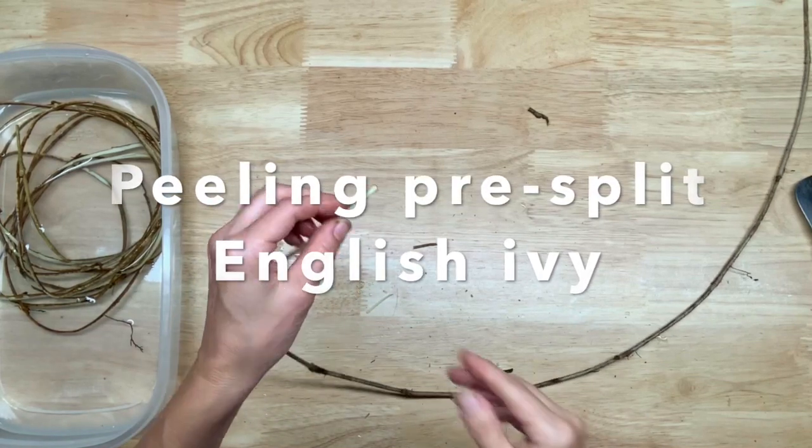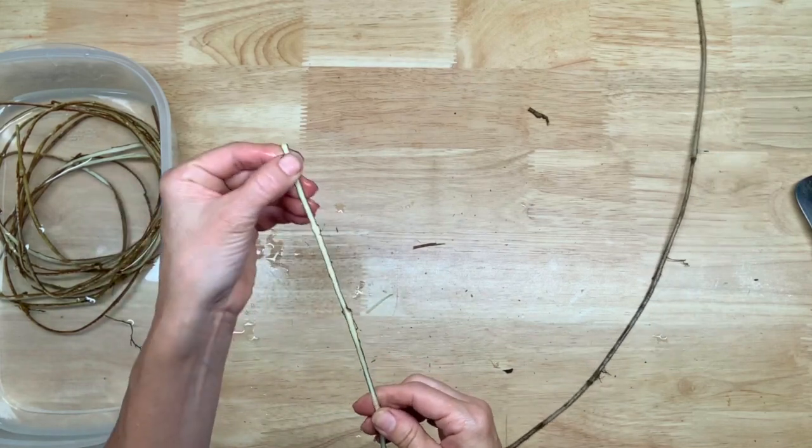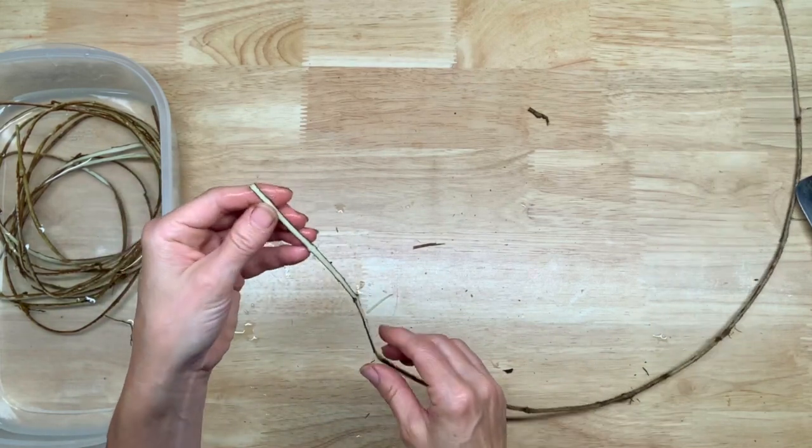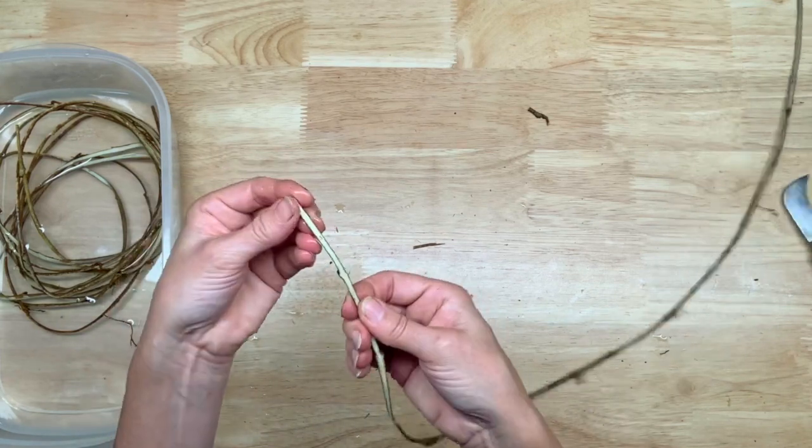Now I've got my English ivy split in half, and you'll notice it will start to dry out very quickly because it no longer has the protective bark on the inside.